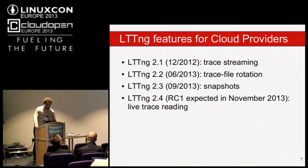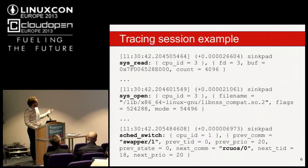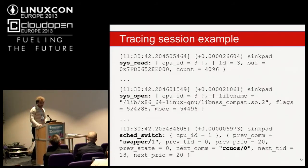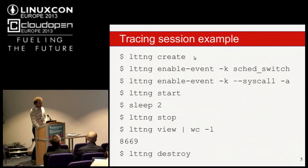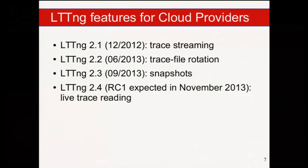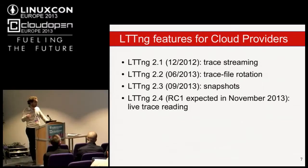In December 2012 we introduced trace streaming. In the previous example I was writing the trace to a local disk. With this feature we can now extract the trace to a remote host. Inside lttng create, you add the -U flag with a network address and it will send the trace to that host. So instead of writing locally, you can extract and read it from elsewhere.